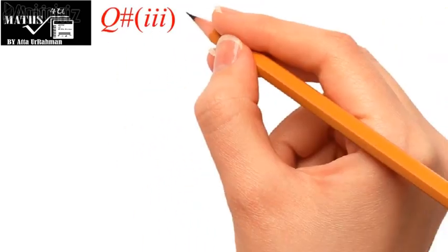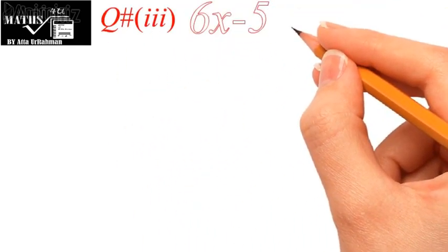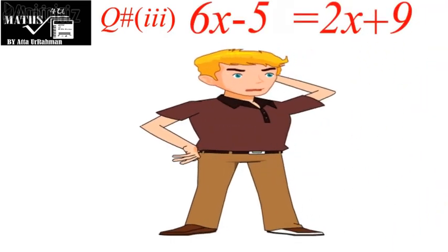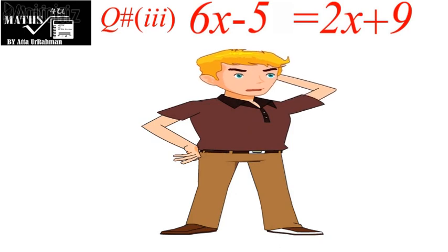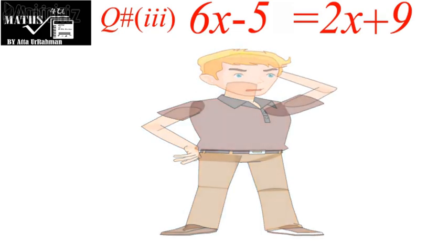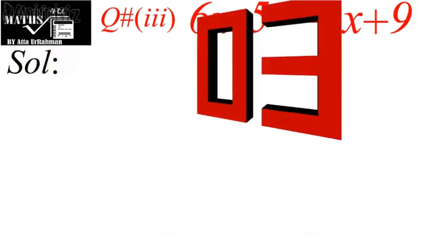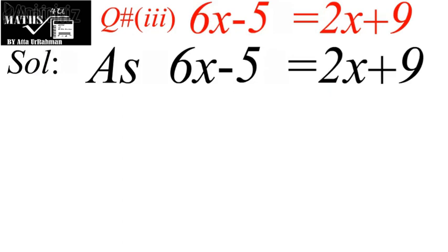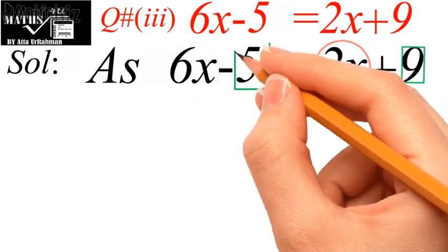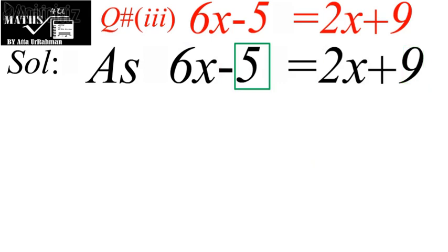Now moving towards the third problem, which says 6x minus 5 equal to 2x plus 9. When someone faces such a problem, it is not too hard because it has no fractional values or denominators. Whenever you see such type of problems, always follow this rule: transfer like terms of one kind to one side of the equation, and like terms of another kind to the second side.